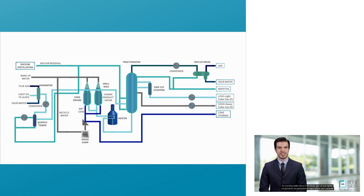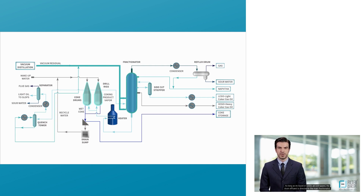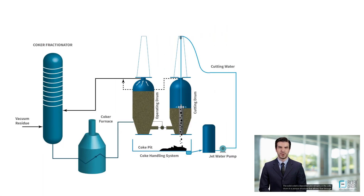As cracking takes place in the drum, gas oil and lighter components are generated in vapor phase and separate from the liquid and solids. As long as no liquid or solids are entrapped, the drum effluent is directed to the main fractionator, where it is separated into fractions based on their boiling points. The solid coke is deposited and remains in the coke drum in a porous structure that allows flow through the pores.